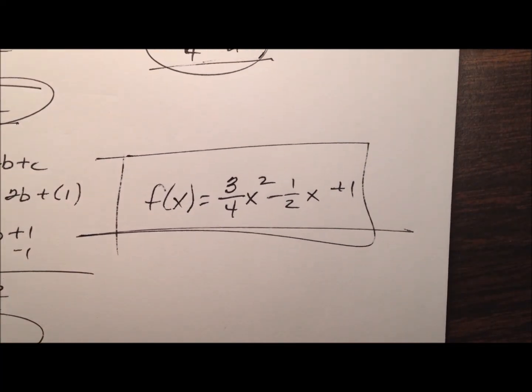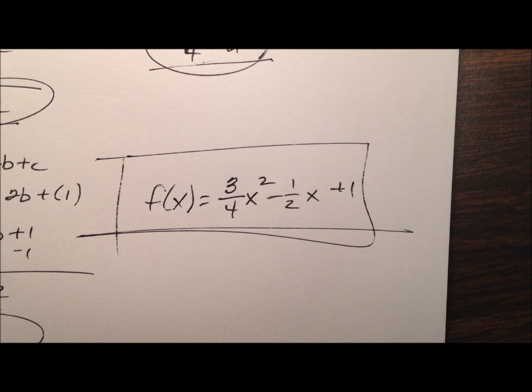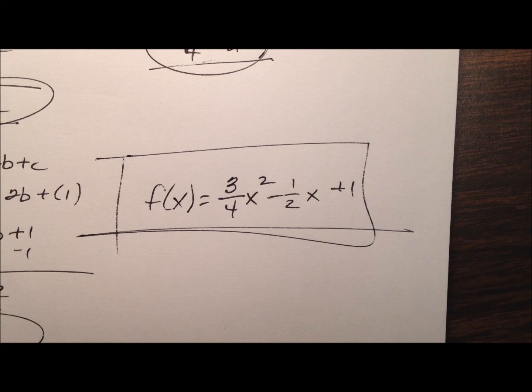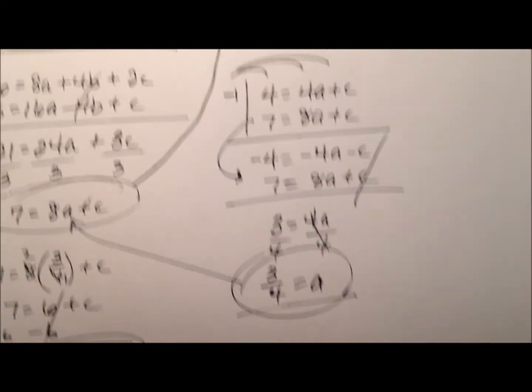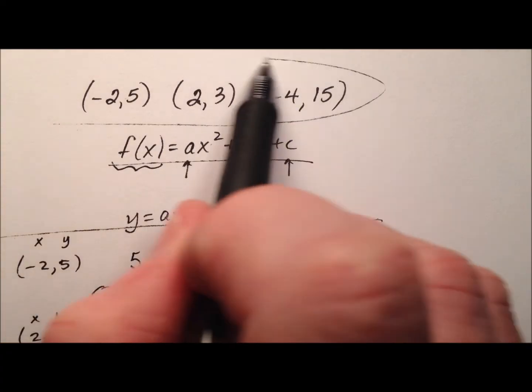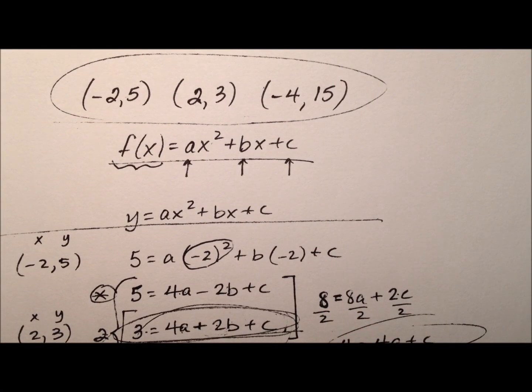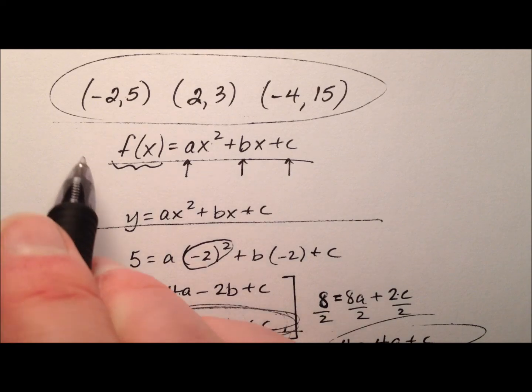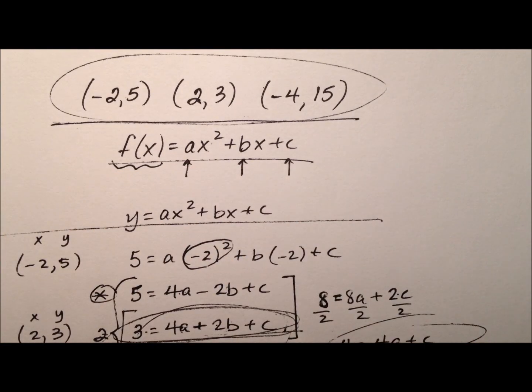We have f of x equals 3 fourths x squared minus 1 half x plus 1. And that's going to be the function, this quadratic function, whose graph is a parabola and it will pass through these three points. Let's finish off this video by showing you what that graph looks like and it will be passing through these three points.